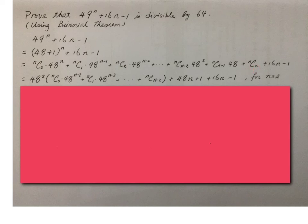nCn is 1, and then plus 16n minus 1. Now, then we see that for these expressions to be valid, it is for n greater than or equals 2.